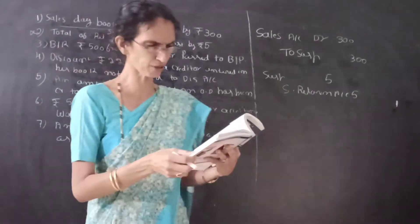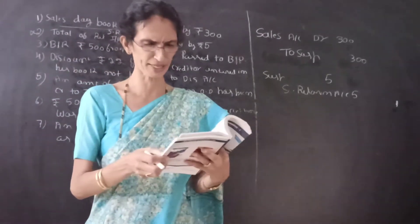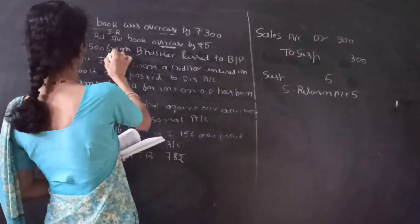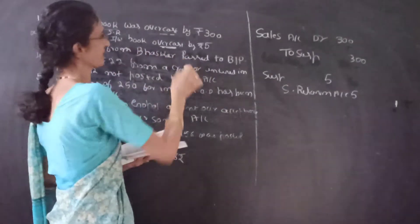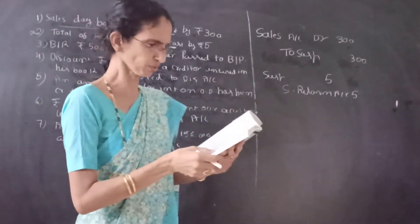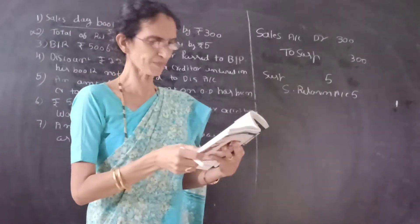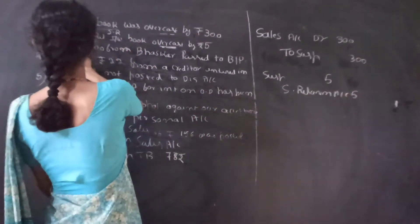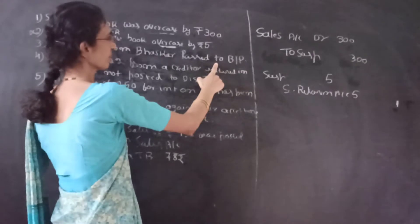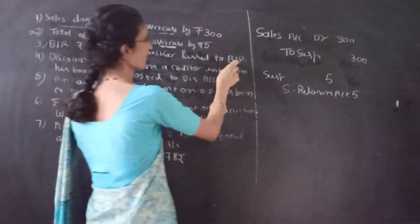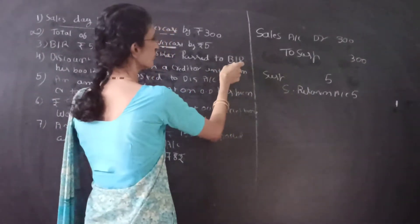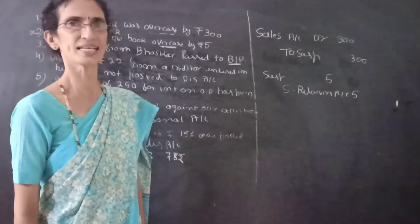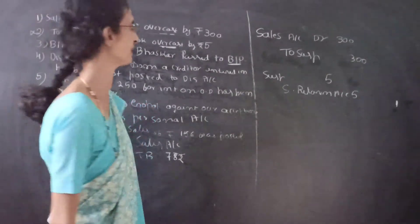The next transaction: bills receivable of rupees 500 from Basker was passed through the bills payable day book. So bills receivable has been recorded in the bills payable book — this is wrong. Bills payable is always credited as it is a liability. Since it is wrong, we have to reverse it — we now debit the bills payable account.